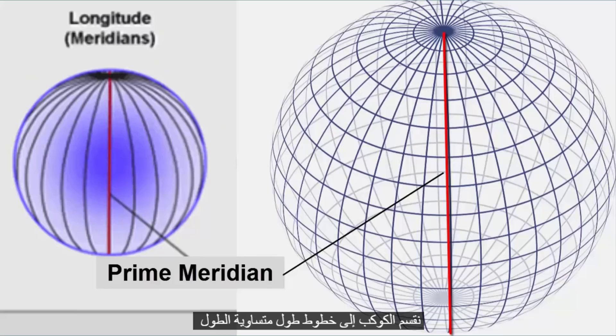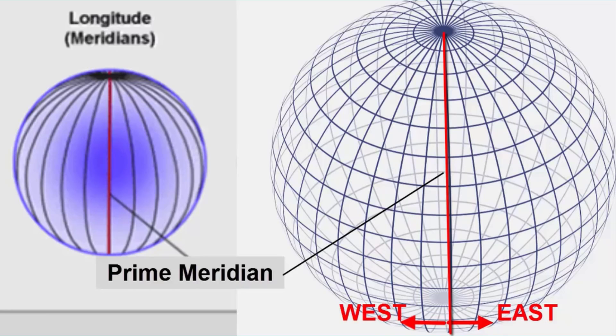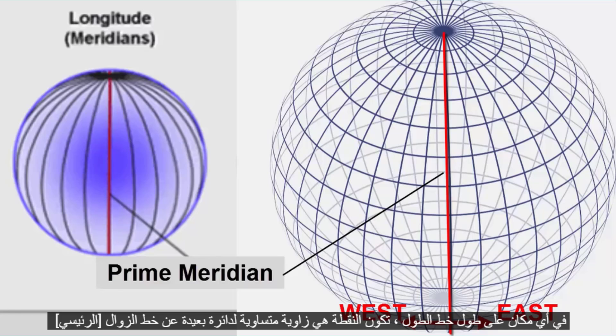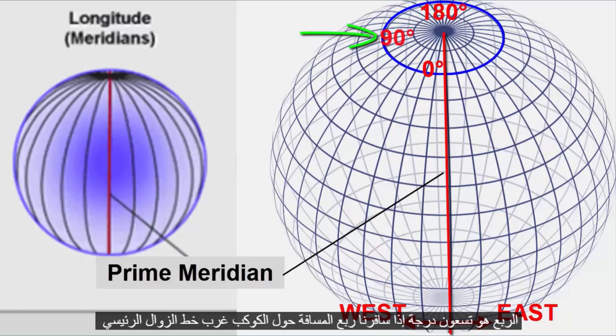We break the planet up into equal-length lines of longitude that run from north pole to south pole at intervals east and west of the prime meridian. Anywhere along a longitude line, a point is an equal angle of a circle away from the prime meridian. Since a complete circle is 360 degrees, half of one is 180 degrees, and one-quarter is 90 degrees.